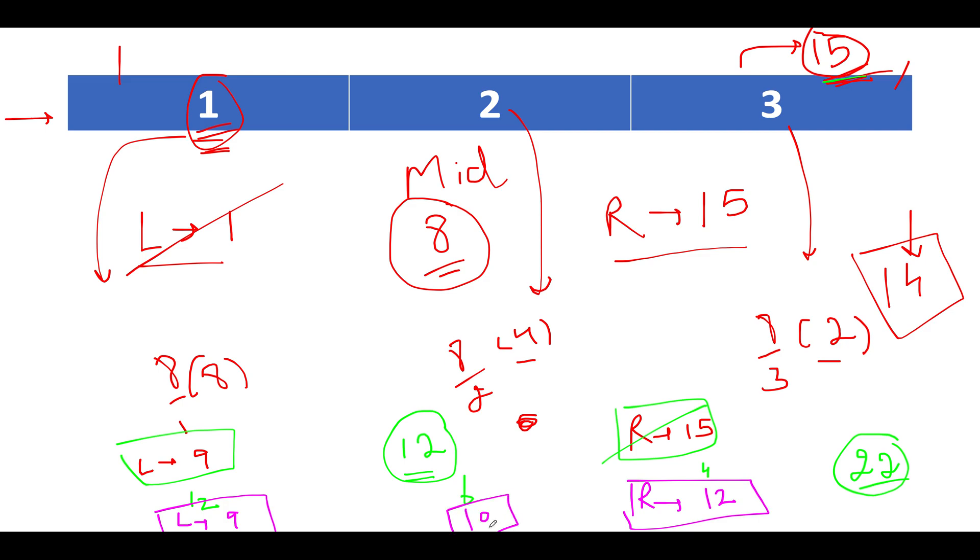So the middle value happens to be 10. Let's calculate the total trip count that can be completed in 10 units of time. So 10 by 1 gives you 10, 10 by 2 gives you 5, 10 by 3 gives you 3. So the total trip count would be equal to 10 plus 5 is 15, 15 plus 3 is 18. So 18 happens to be way more than the target trip count.